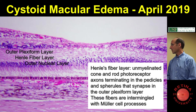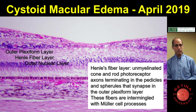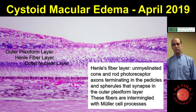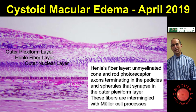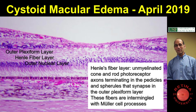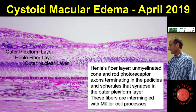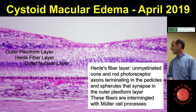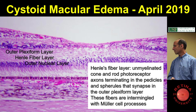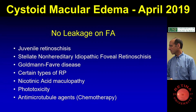But if you look at diabetic macular edema, it tends to be mostly out here where there's no retinal vessels, which is somewhat controversial. Henle's fiber layer is unmyelinated cone and rod photoreceptor axons terminating in the pedicles of the outer plexiform layer.